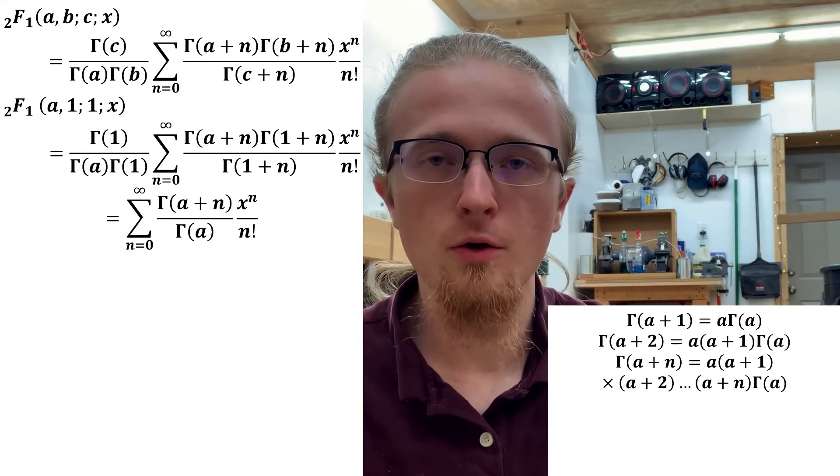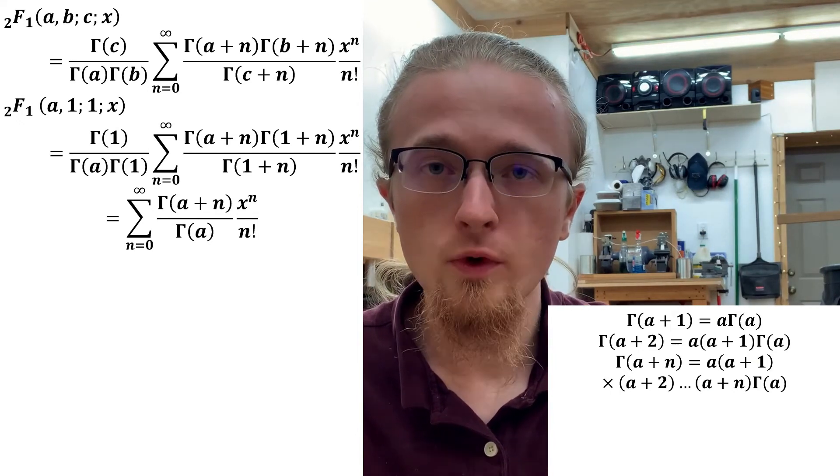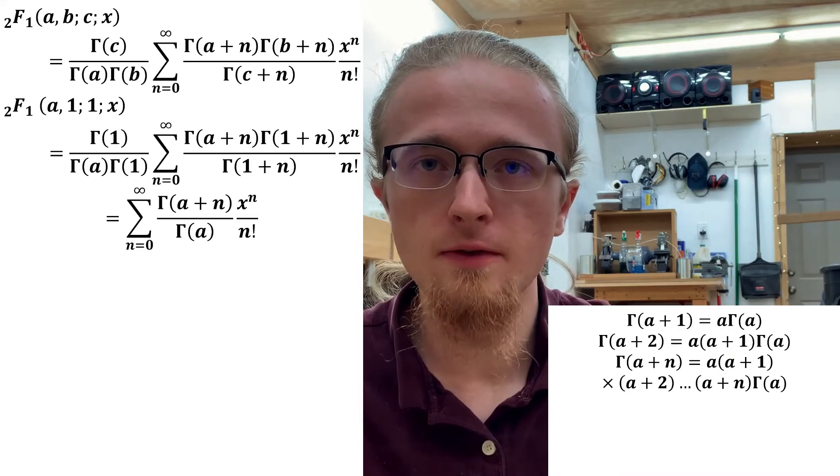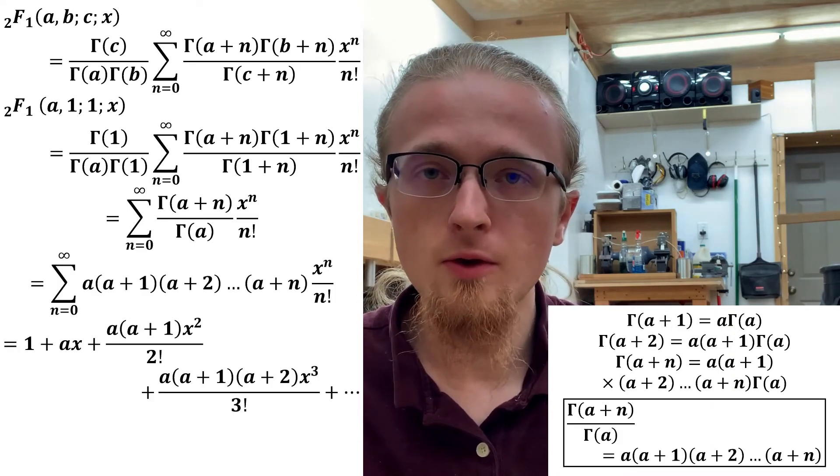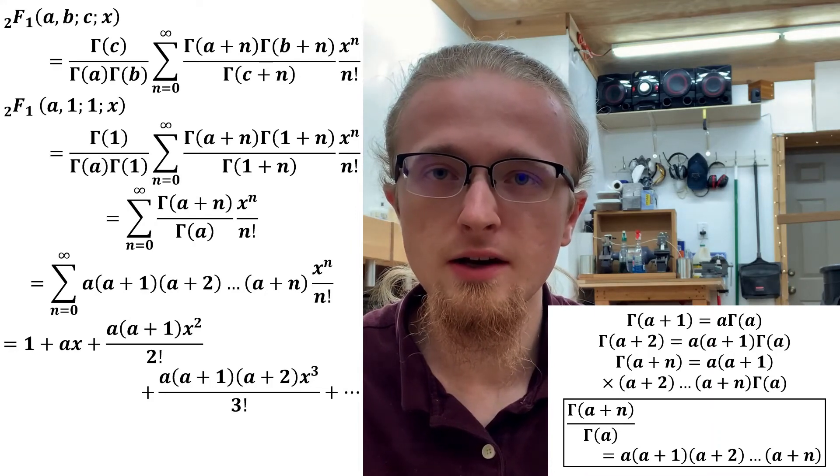Let's move back to the power series we're actually trying to sum. We see that there's a factor of Γ(a + n) over Γ(a) under the sum, which we can rewrite without any gamma functions using the identity we just derived.